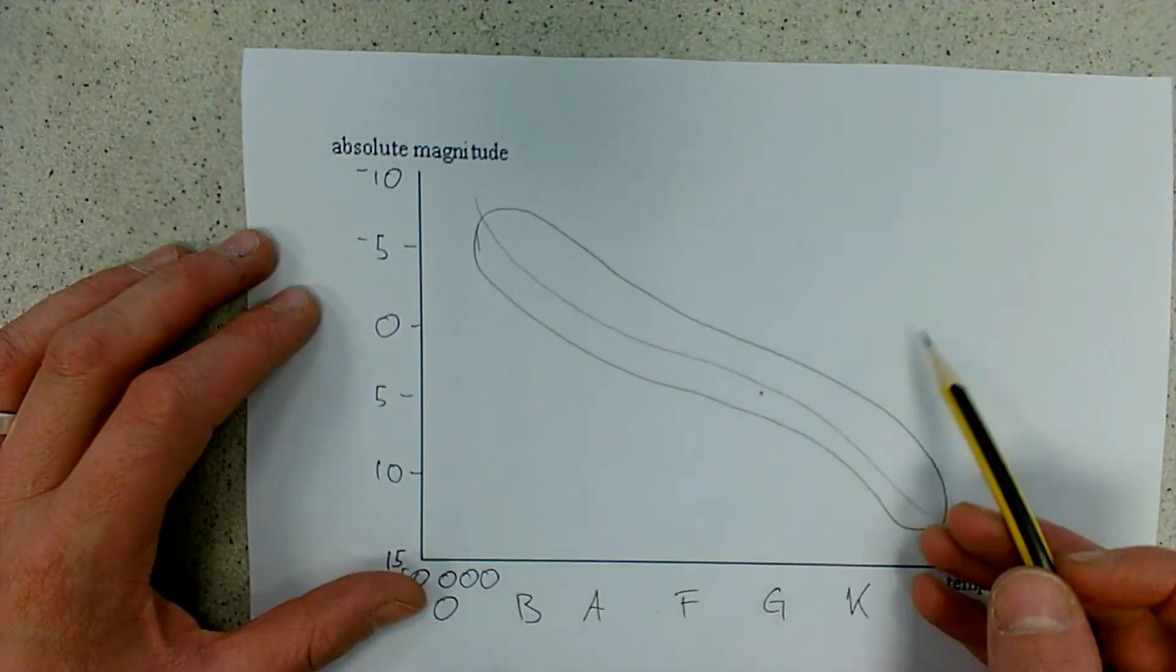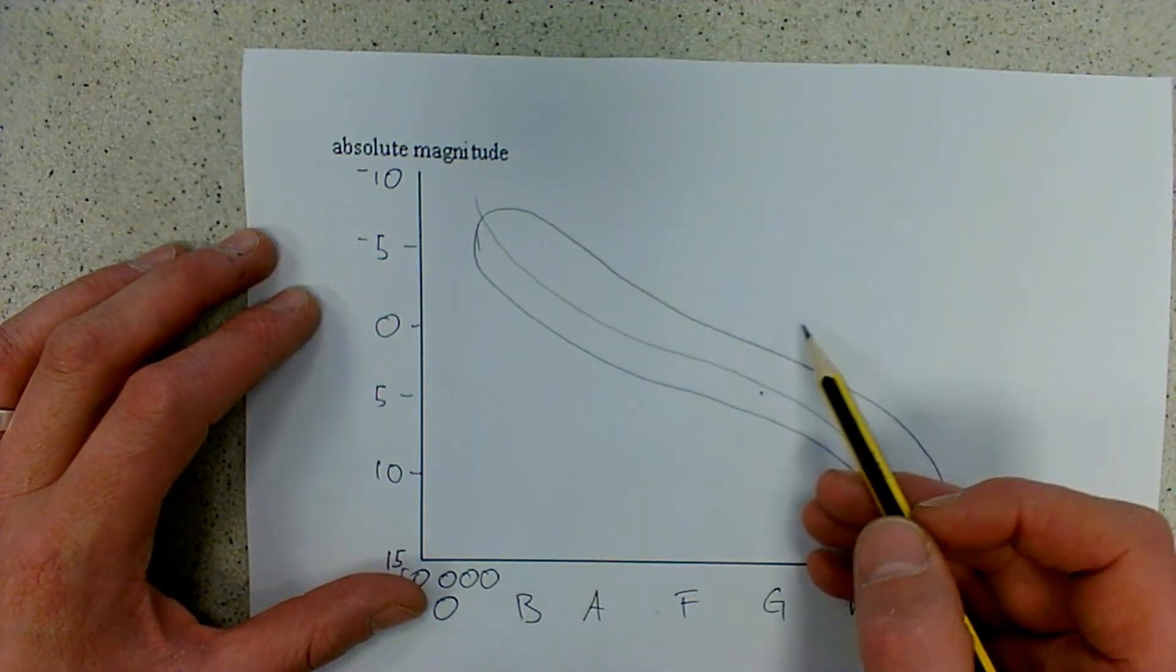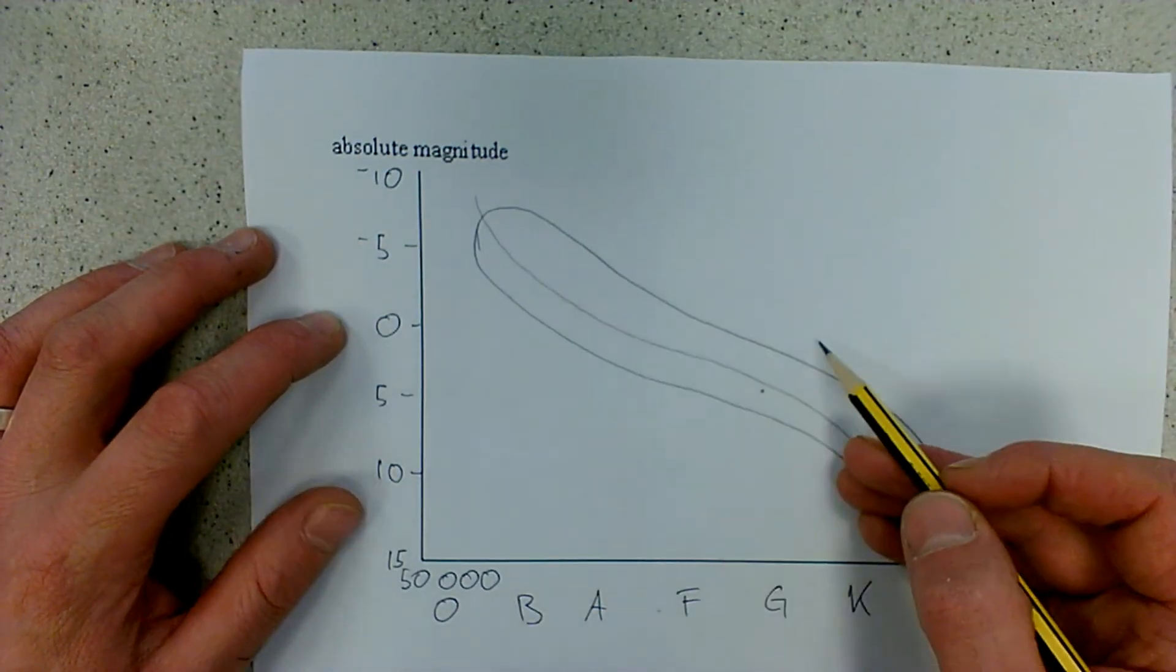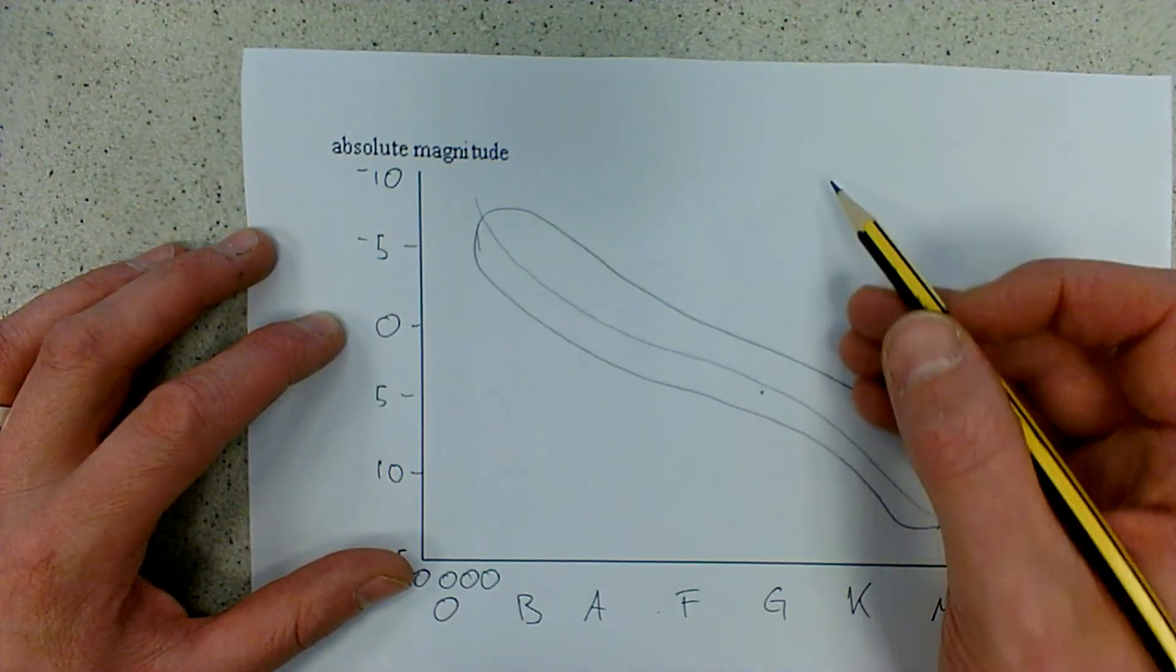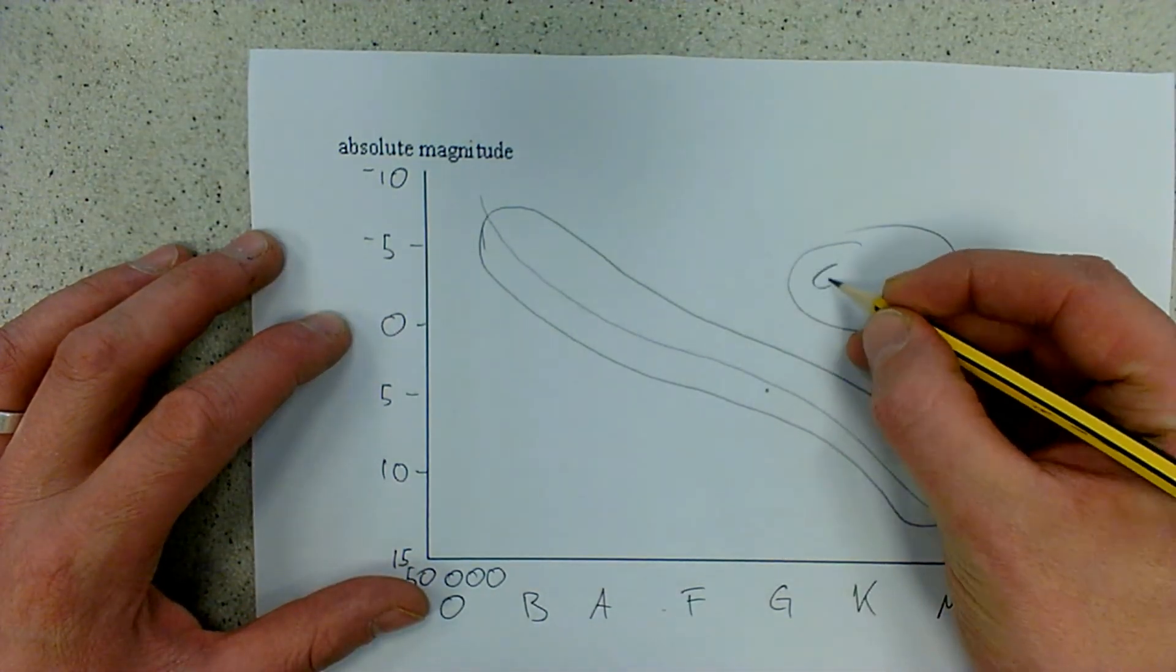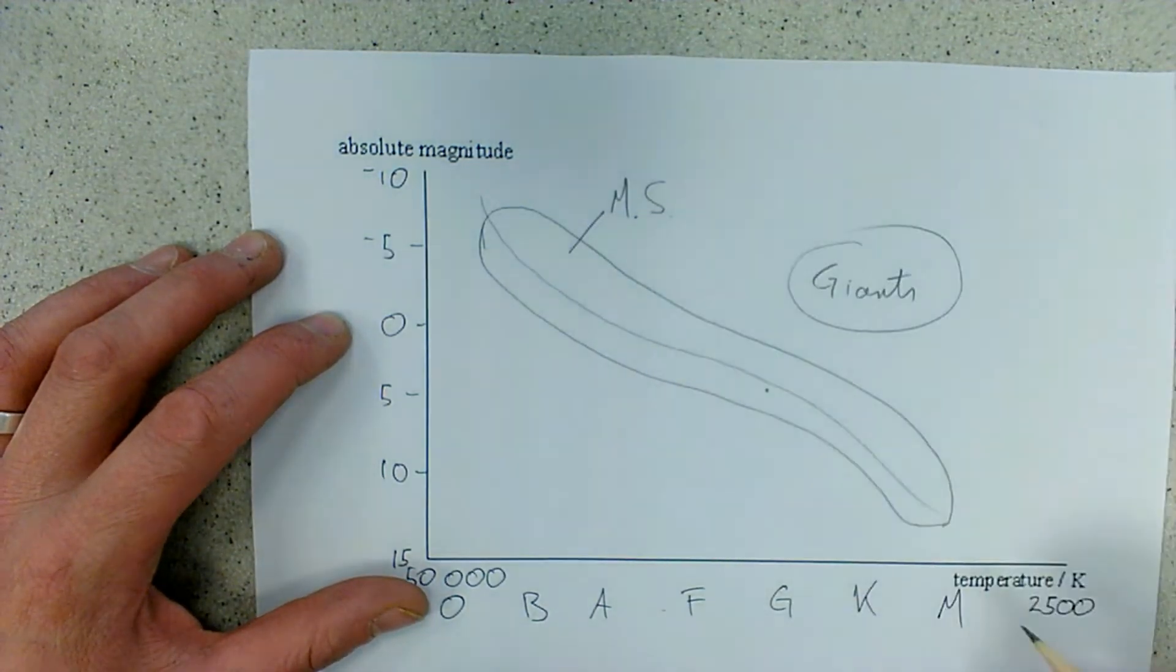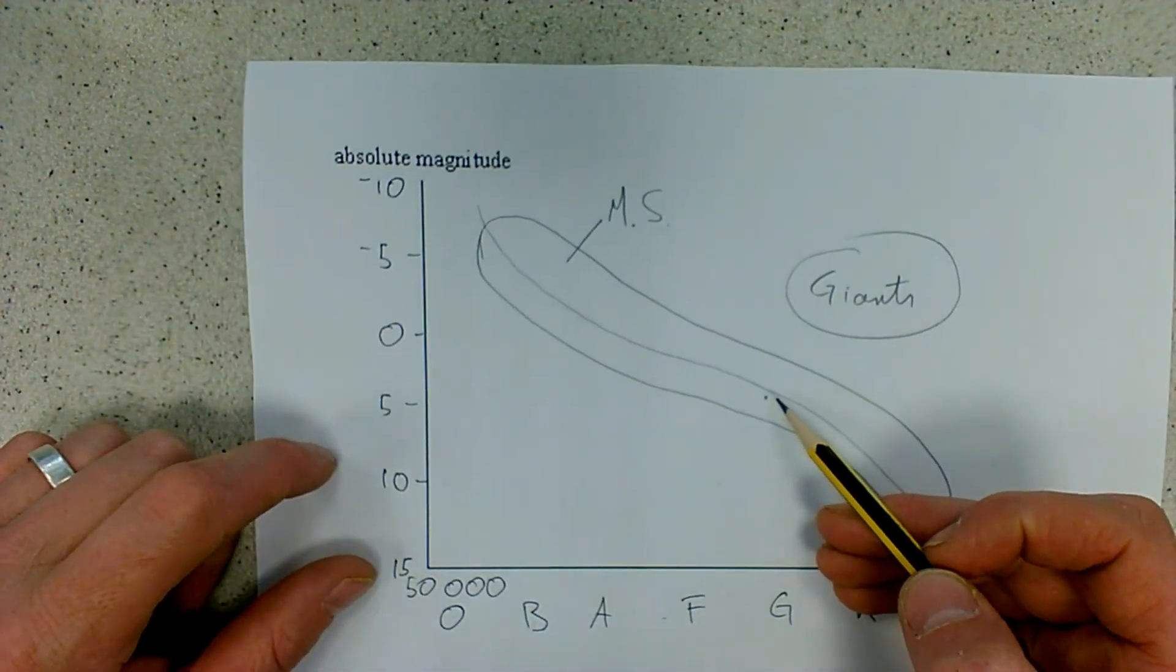The giant stars will be up here and we need to make sure that they are cool, so they'll be over in G, K and M class. But they also have very bright magnitudes. They'll be very powerful luminous stars. So they will not be dimmer than a magnitude of zero, but they'll be somewhere up here between zero and minus five, maybe even as high as minus ten. So I'm just going to draw a cloud of giants over here. And I'm going to label those giants. And this is my main sequence stars. We need to make sure that my cloud of giants doesn't touch my cloud of main sequence stars.